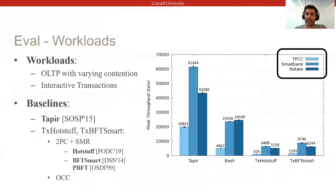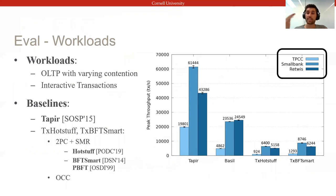We implemented a prototype and evaluated its performance over three common online transaction processing workloads — TPC-C, SmallBank, and RETWIS — which all use interactive transactions but experience varying levels of contention. On the y-axis, I'm showing the peak throughput on these workloads.